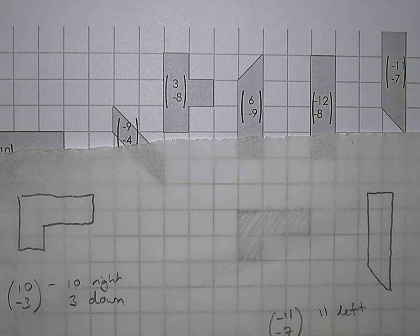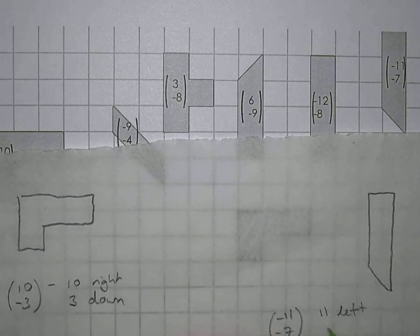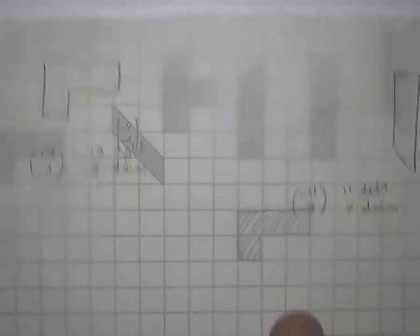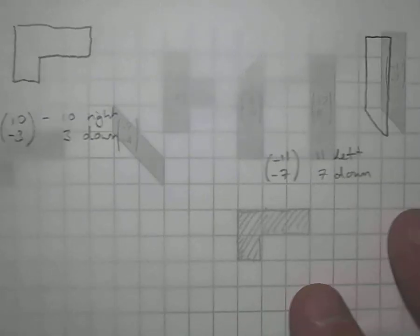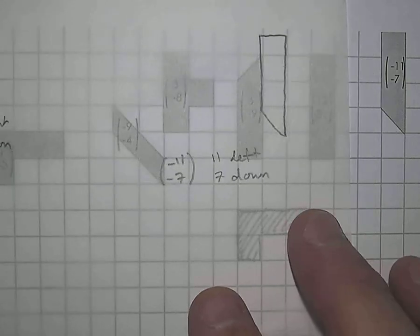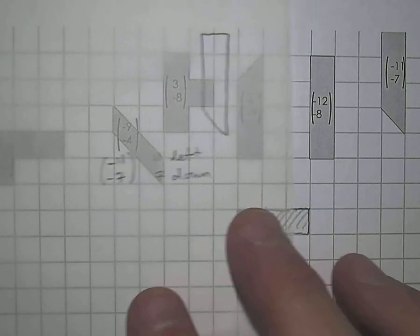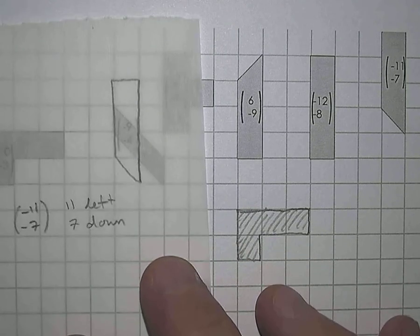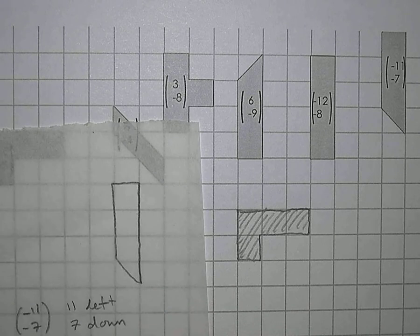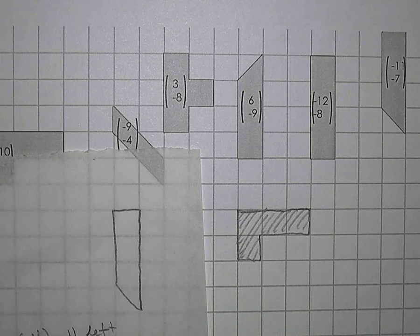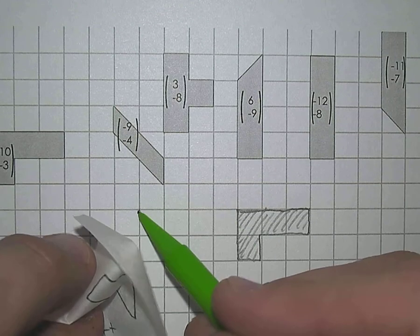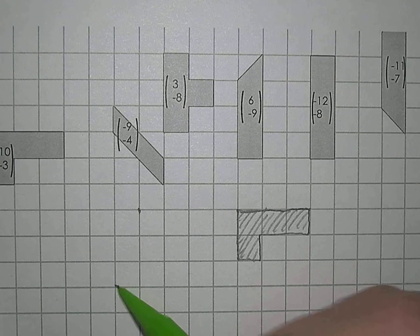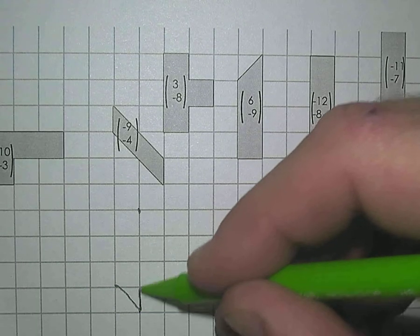The vector says minus eleven, minus seven. So that is eleven left, because minus is the left direction and plus is the right. And seven down. Now I'm going to slide it. Eleven left — one, two, three, four, five, six, seven, eight, nine, ten, eleven. And now seven down — one, two, three, four, five, six, seven. So it's going to be from there down to there, and it's going to be like that.